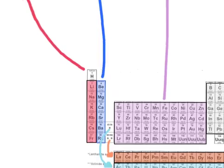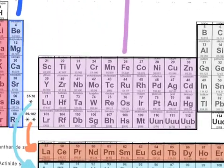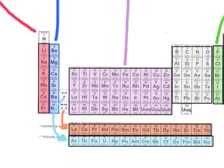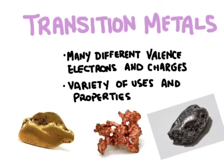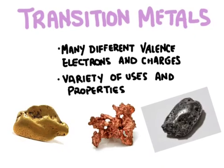The next group in the periodic table are the transition metals — this is the large group here in purple. The transition metals include so many elements that there's really a wide range of different properties, but let's look at a couple of examples. They have a lot of different valence electrons since they move across the periodic table. There's a variety of uses and properties — we can see gold, copper, and platinum. For the most part, transition metals are going to be hard dense solids, except for mercury, which is the only liquid metal. Transition metals are very conductive, so they're used in electric wires a lot. Some are quite rare and considered precious metals, like gold and platinum, so they're pretty expensive and turned into jewelry.